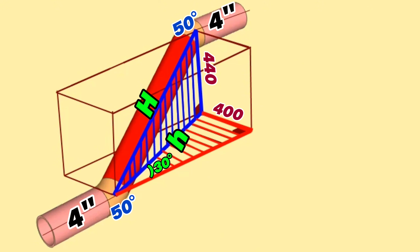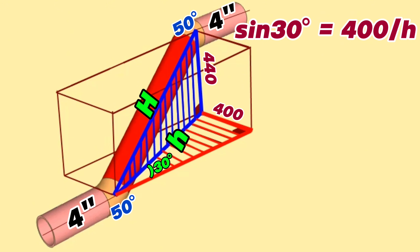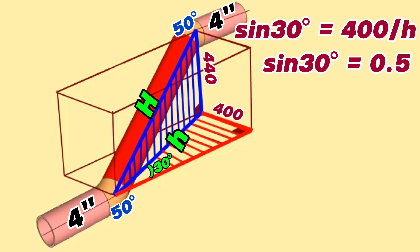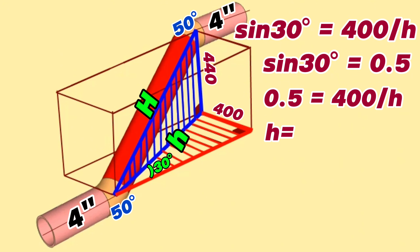We will use the trigonometric function formula in such cases to calculate the hypotenuse of this right-angle triangle. According to the trigonometric function, sin 30° equals 400 divided by hypotenuse h. We will use a scientific calculator or phone calculator to find sin 30°. Sin 30° equals 0.5. Writing 0.5 instead of sin 30°, then 0.5 equals 400 divided by h. We continue: h equals 400 divided by 0.5. Using a calculator, h equals 800 millimeters.